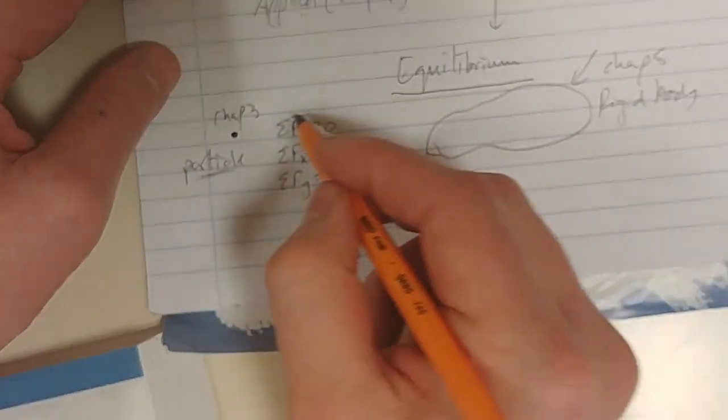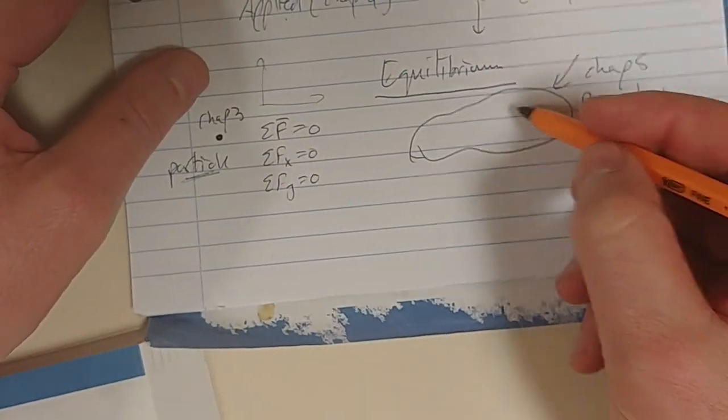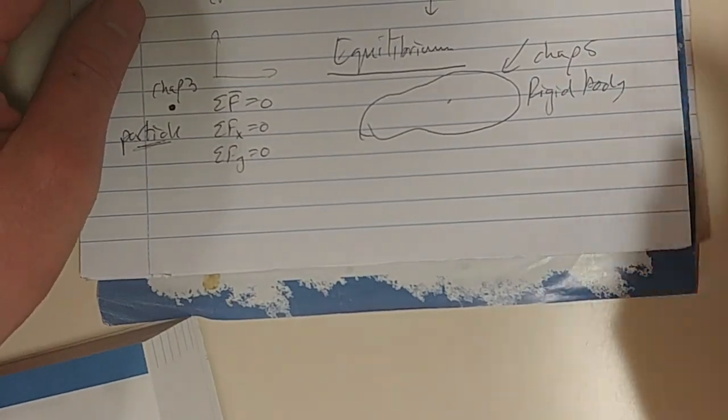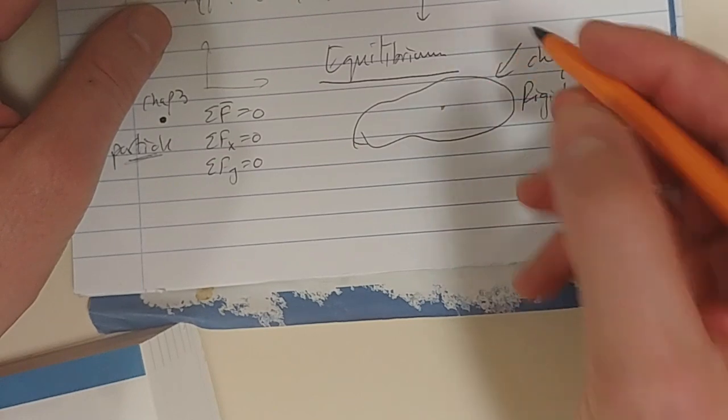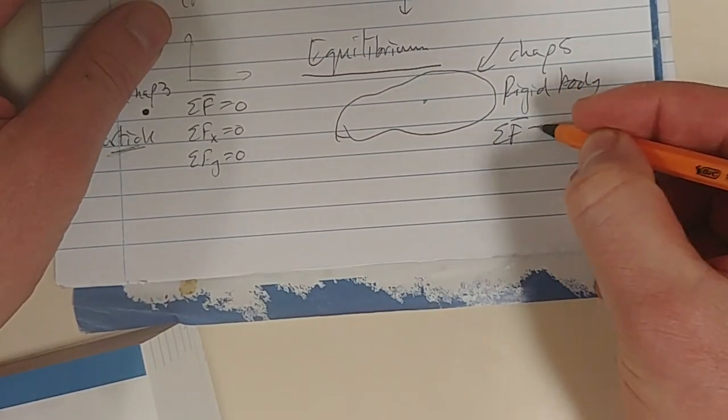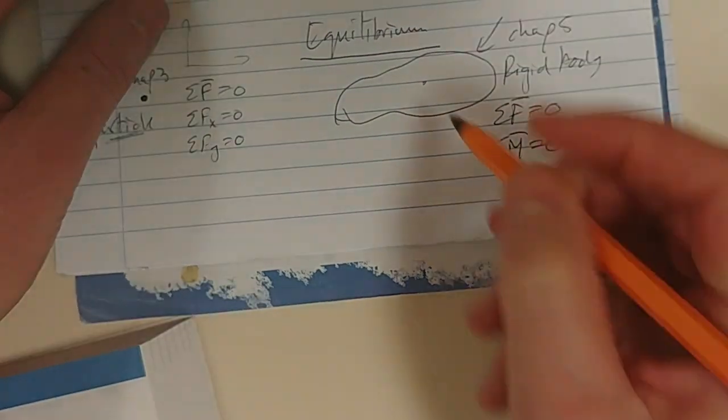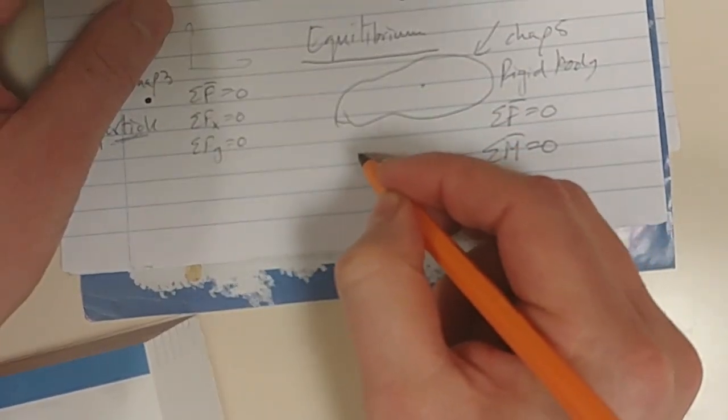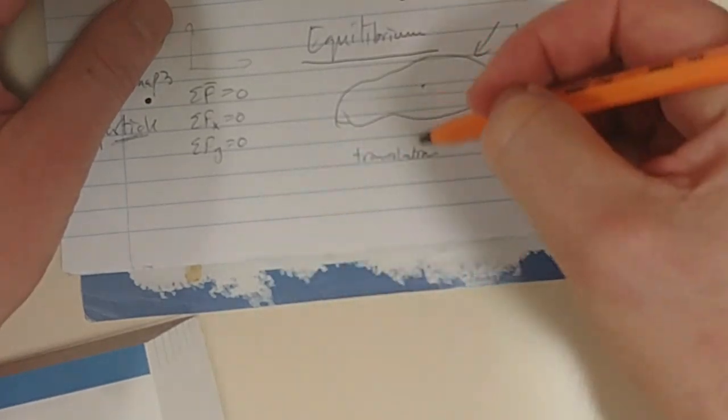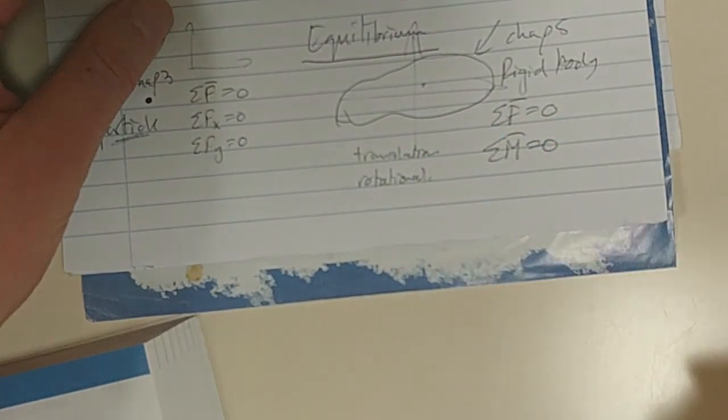All we need to know is, are the forces in the X and Y, the sum of the forces in the X and Y equal to zero. But for a body, in order for a rigid body to be in equilibrium, we need the sum of the forces to be equal to zero and the sum of the moments to be equal to zero. So, we need both a translational equilibrium, meaning straight line motion, and we need rotational equilibrium.